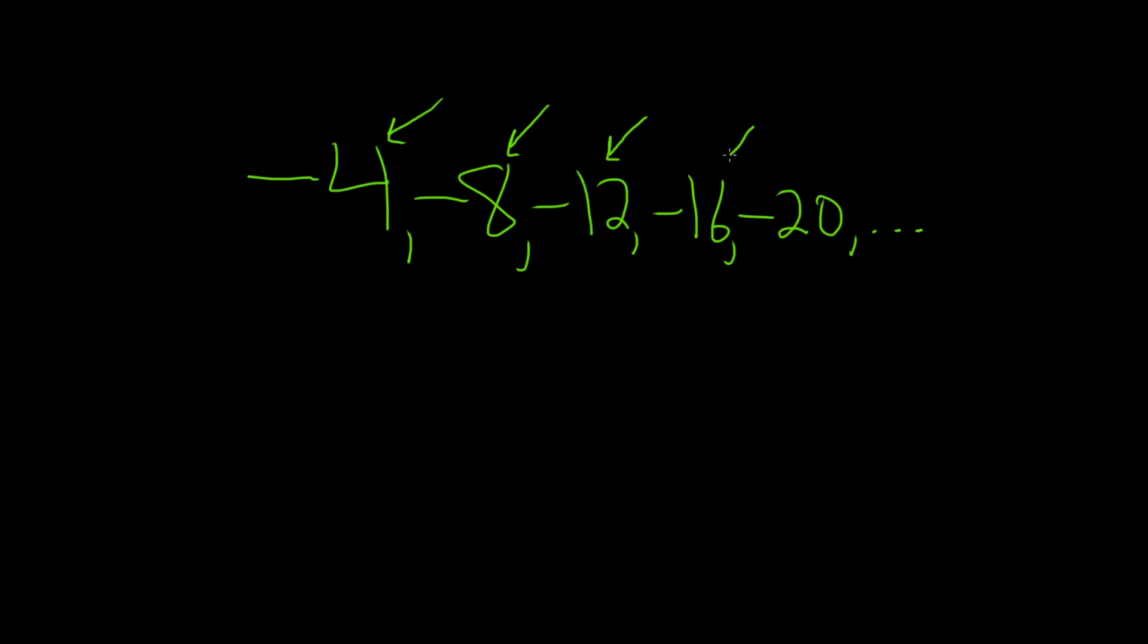Add negative 4 again, you get negative 16. Add negative 4 again, you get negative 20. So that's what we're going to keep adding over and over to get the next one.